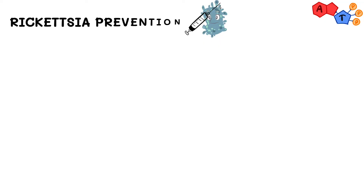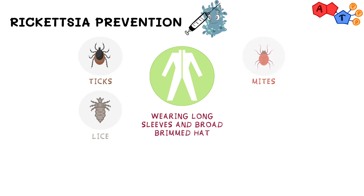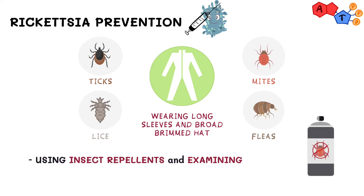Now the question is, how can we prevent it? It can be prevented by wearing long-sleeved protective clothing and a broad-brimmed hat to reduce the risk of infection when undertaking activities where human contact with ticks, lice, mites, or fleas may occur. In addition to that, using an insect repellent and examining your skin for possible bites following these activities may be helpful.